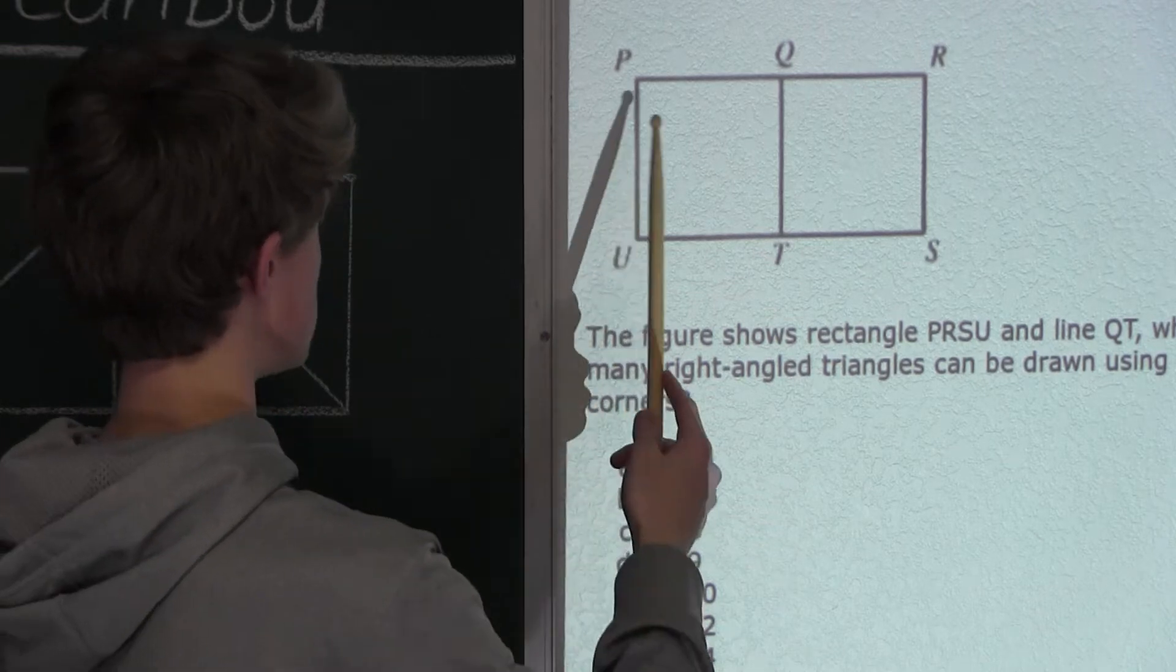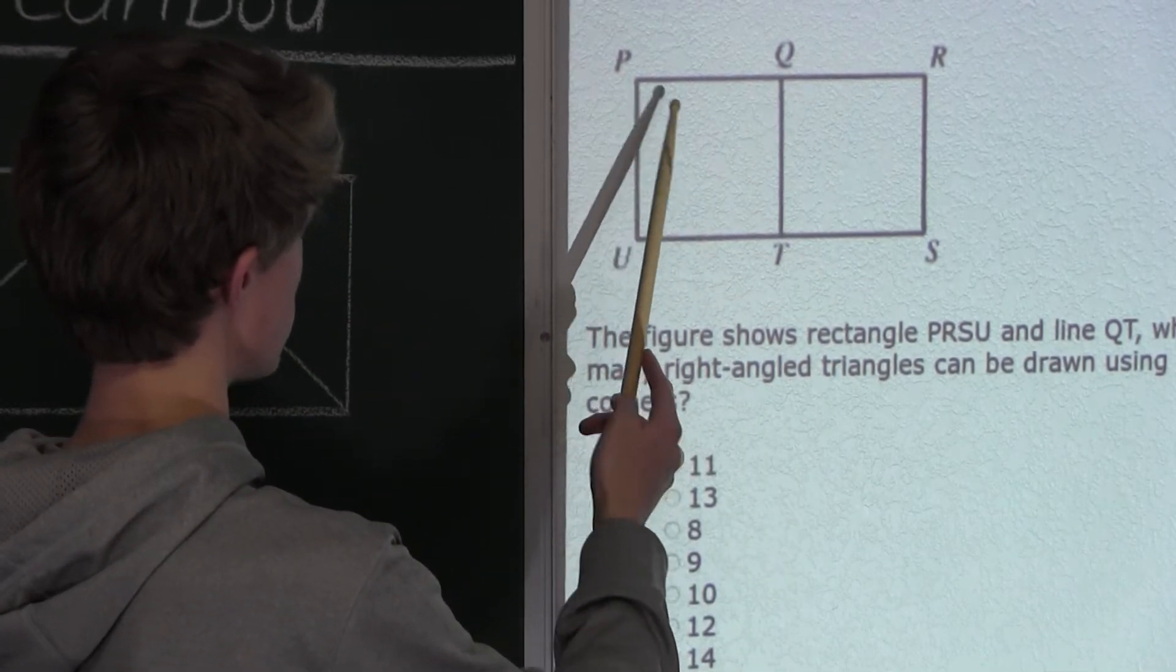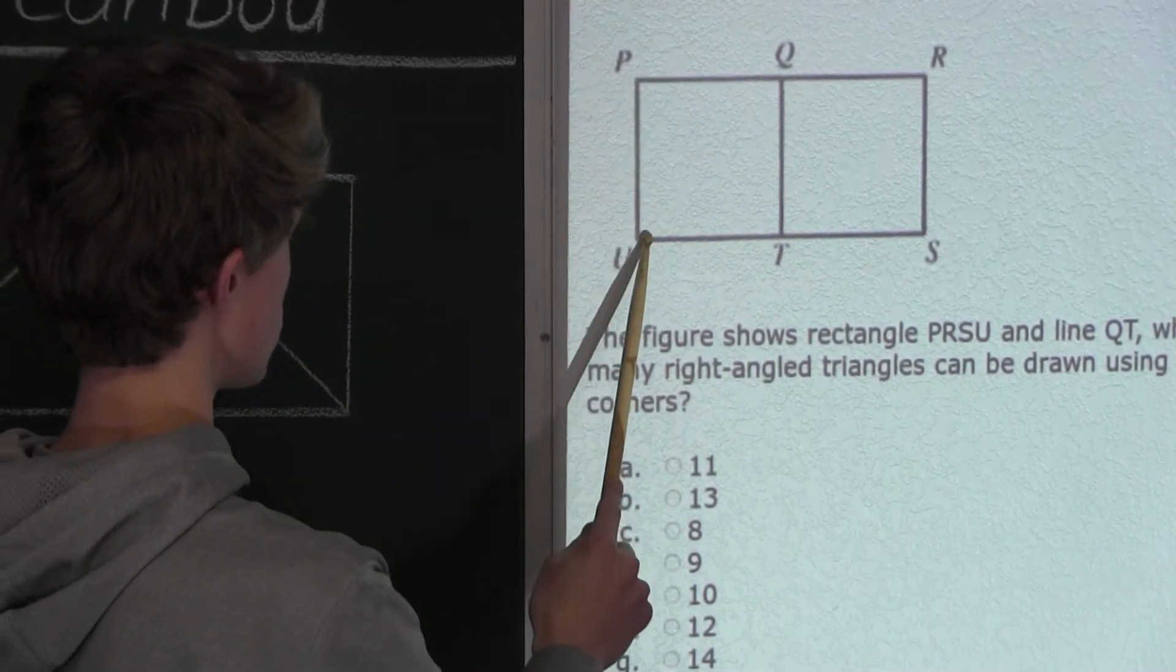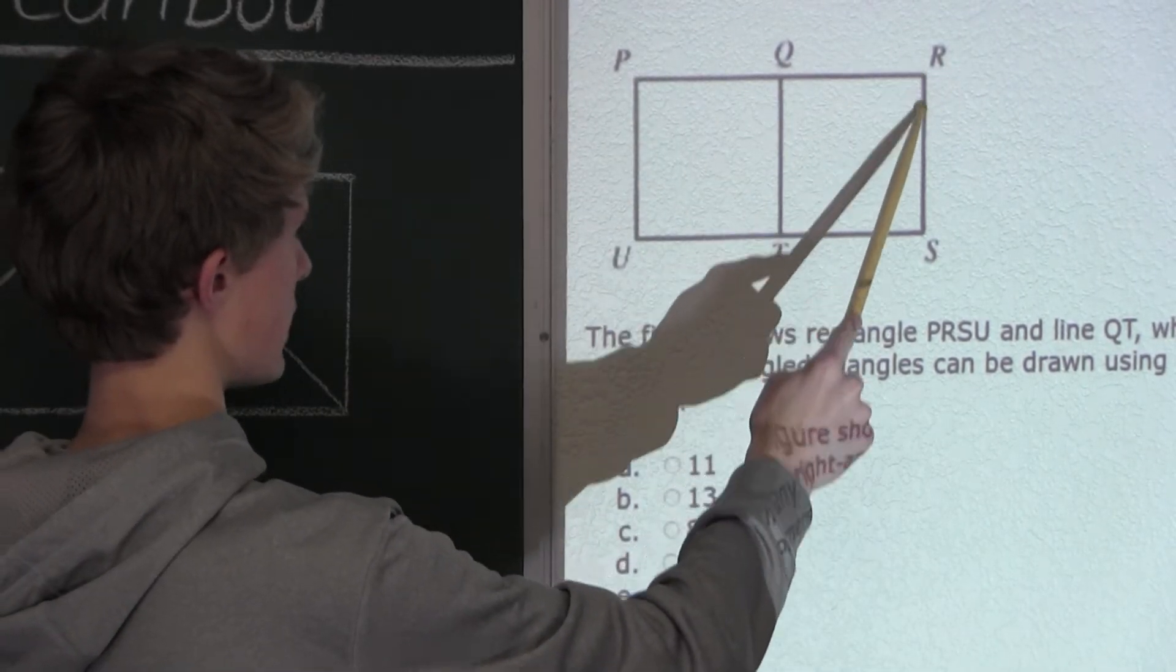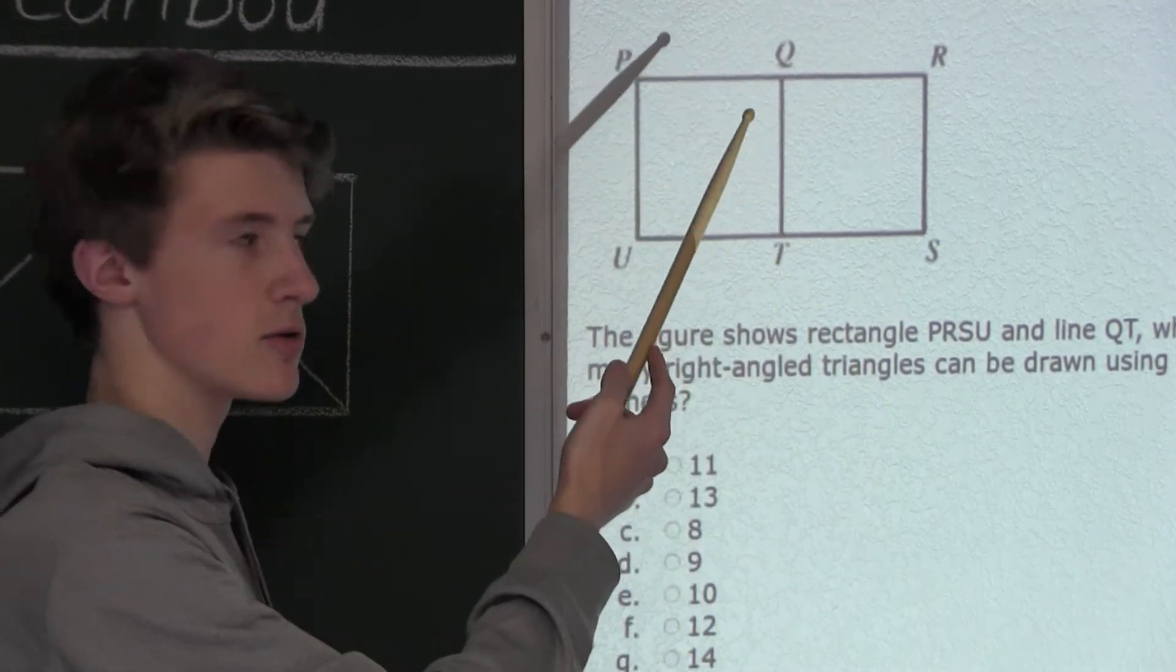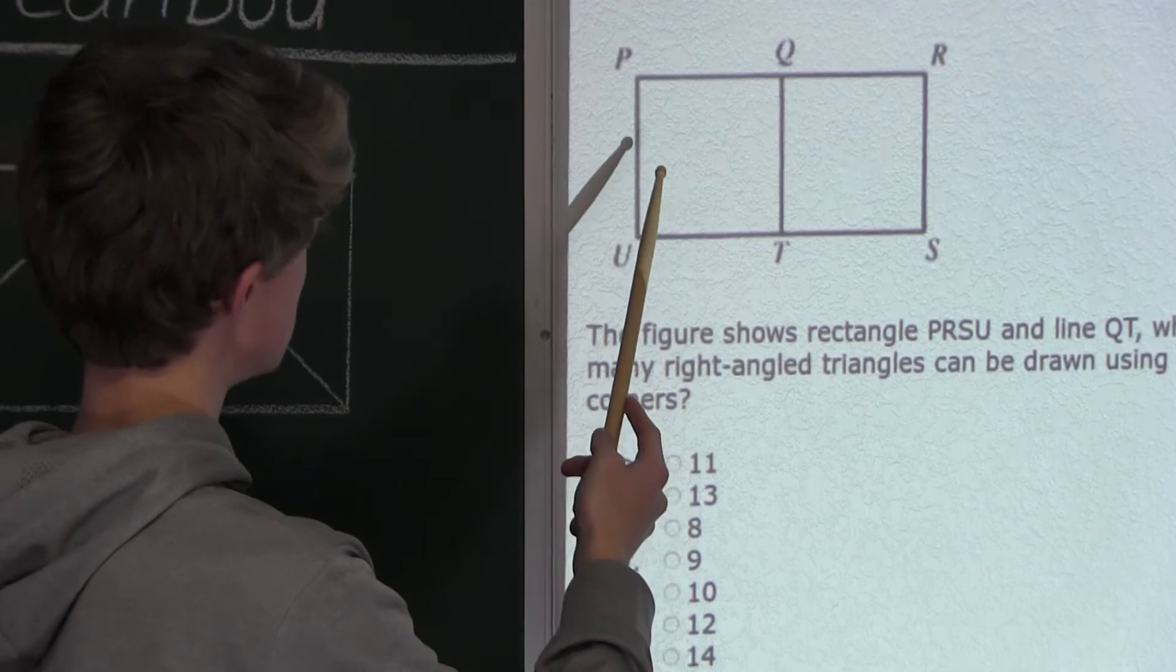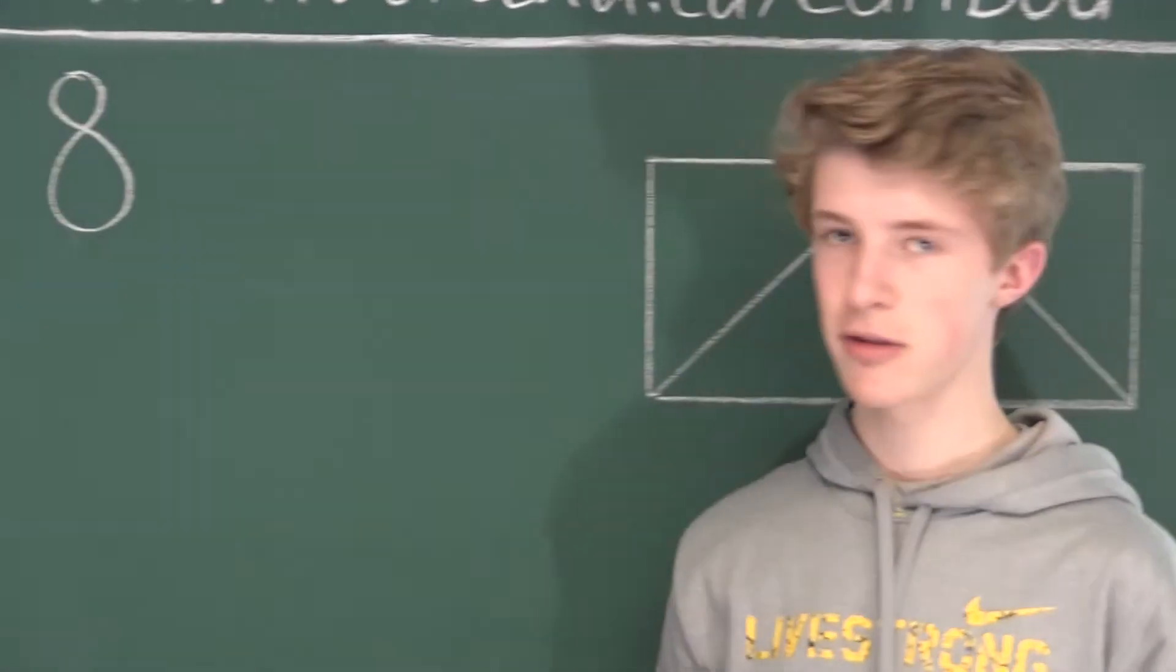And again, just like before, a right-angled triangle can be made with a right angle in each corner. So for example, for corner P the right angle would be here, and for corner R the right angle would be here, and that would be the right-angled triangle, and so on. So again, since there are four corners, four right angles, that is another four. So we have eight plus four.